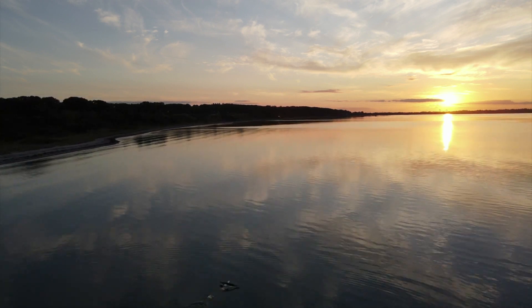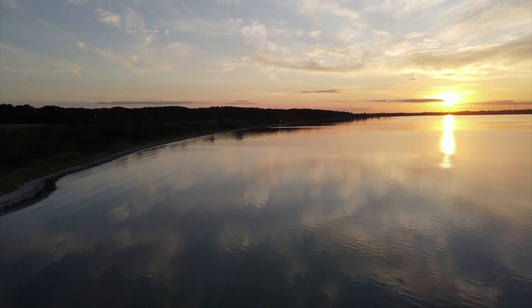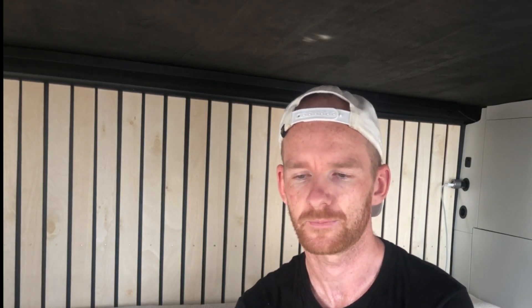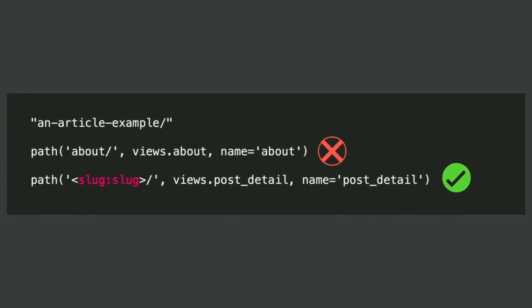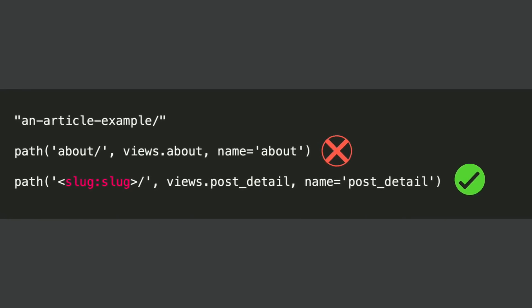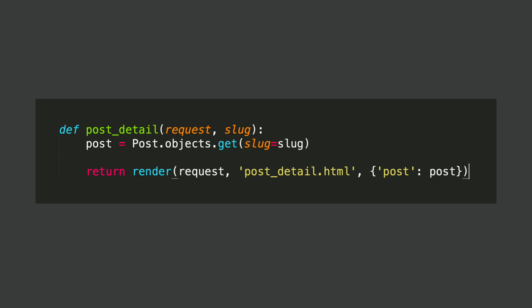In the urls.py file is where everything starts happening. The URL file contains a list of the different pages, like the front page, about, category, post detail, etc. Django will help you find the correct page based on what the URL contains. 'An article example' will not match some patterns, but it will match on this one. What happens here is that Django knows we expect a dynamic address here called slug. When this matches, it will call a view called post_detail, which comes from the views file. Here you can see the detail view: we get the post from the database based on the URL or slug we get from the urls.py file.